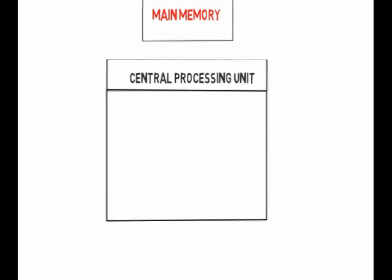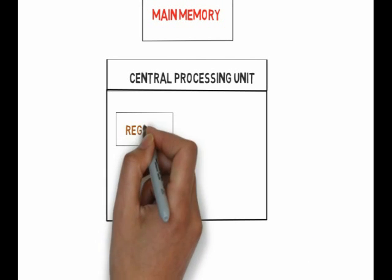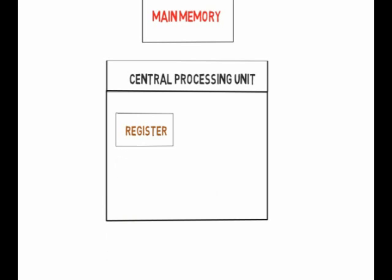Von Neumann architecture comprises a central processing unit, or CPU, to do calculations. Registers are temporary storage areas for instructions or data. They are not a part of memory; rather, they are special additional storage locations that offer the advantage of speed. Registers work under the direction of the control unit to accept, hold, and transfer instructions or data and perform arithmetic or logical comparisons at high speed.